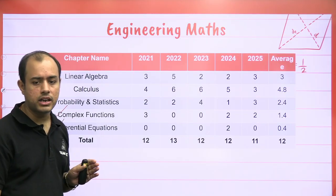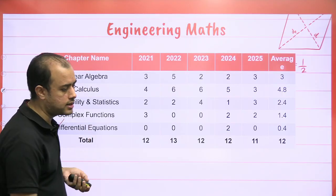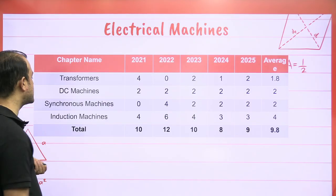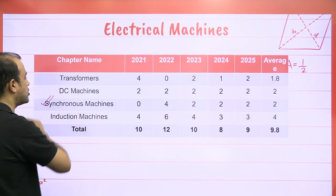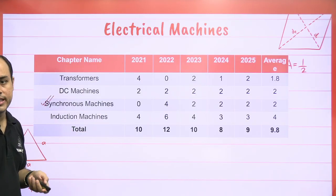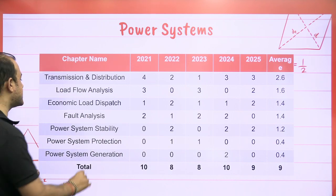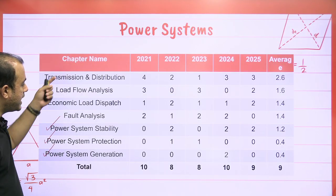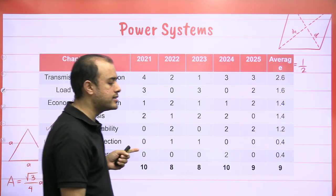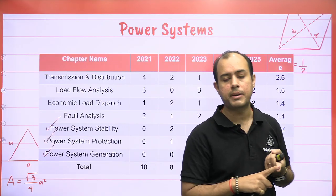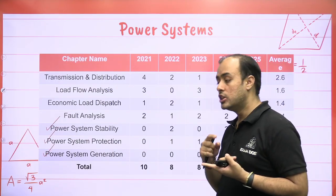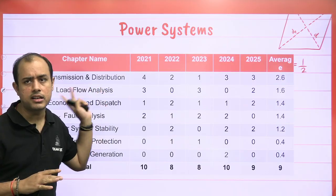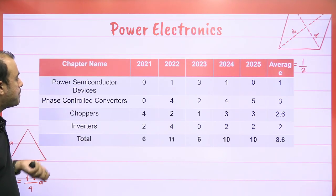In Electrical Machines, if you want to skip, you can skip Synchronous Machines — it is a difficult topic — but try to cover the rest. In Power Systems, you can skip Stability, Protection, and Generation, but try to cover the rest. In Transmission and Distribution, cover selected parts like Transmission Line Parameters, Transmission Line Performance, and Voltage Control — three topics under Transmission and Distribution.